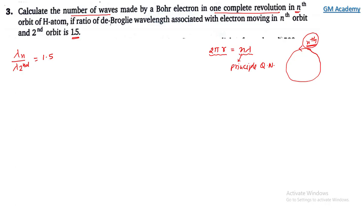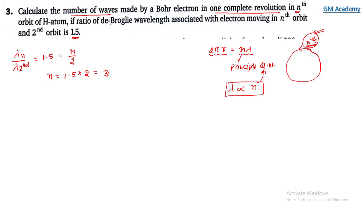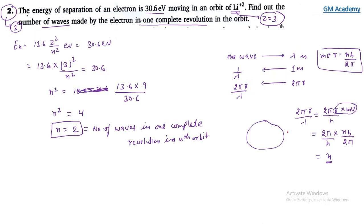In the nth orbit, the de Broglie wavelength is directly proportional to the principal quantum number n. Using the given ratio expression, n / 2 = 1.5, so n = 1.5 × 2 = 3. The principal quantum number n is 3.